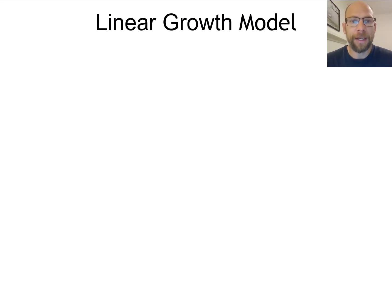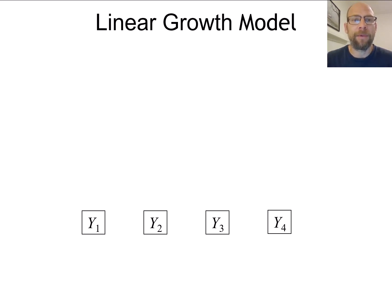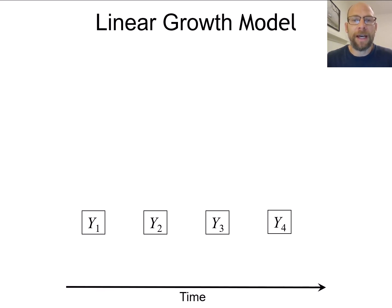I'm going to show you an example of a linear growth curve model. First of all, in a linear growth curve model we have observed variables or indicators — our measured variables. For example, you might be interested in changes in life satisfaction across time, so the variable y might represent our repeatedly measured life satisfaction score based on a self-report questionnaire. So y1, y2, y3, and y4 represent the same variable measured at four different time points.